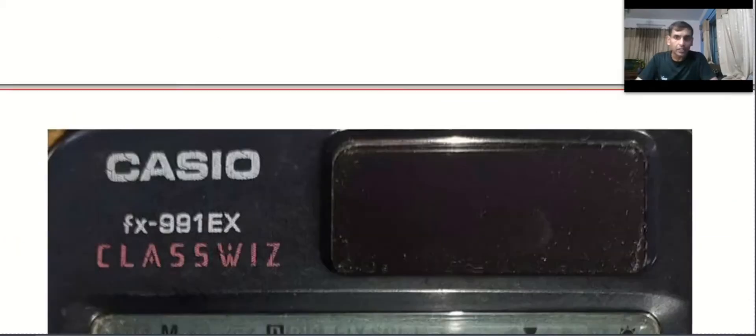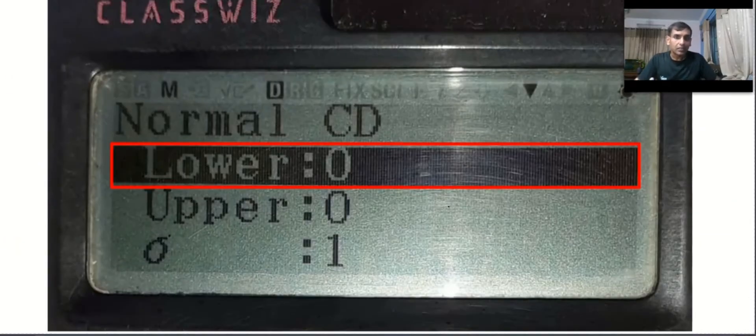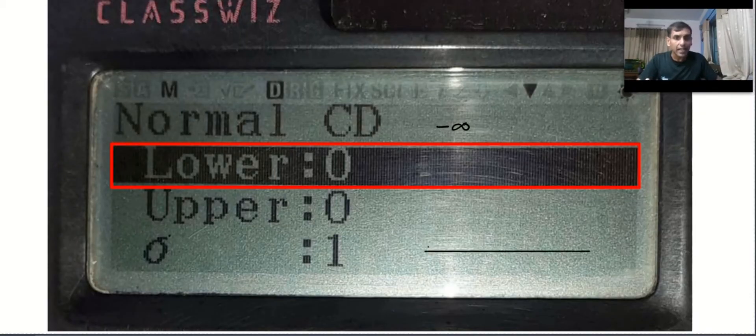Let's go to the next button. Now look at this. We cannot input minus infinity. We cannot input minus infinity, but the graph of the standard normal distribution has one advantage. The graph becomes an asymptote as near as minus 3.5.